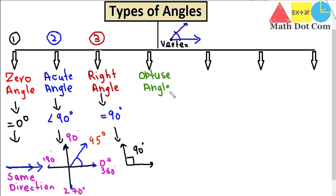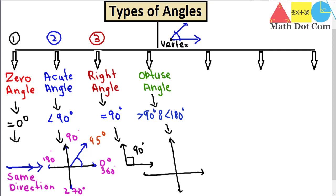The next type is the obtuse angle. Going in increasing order from 0 to 360, after less than 90 and equals 90, we now have greater than 90 and less than 180 degrees — that is called an obtuse angle. It will be between 90 and 180, with no equality — not equal to 90 and not equal to 180. So values like 120, 130, 140, or 170 degrees are all obtuse angles.